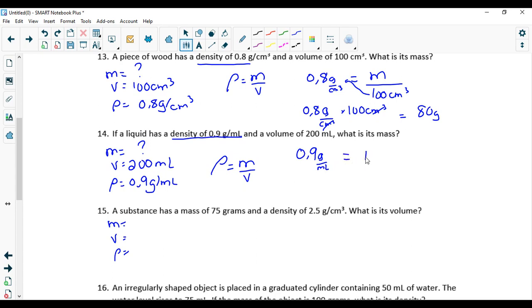So same thing as this question. So 0.9 grams per mL equals m over v. Bring the 200 up here. That's 0.9 grams per mL times 200. Immediately just cancel, you end up with 180 grams. So far so good.